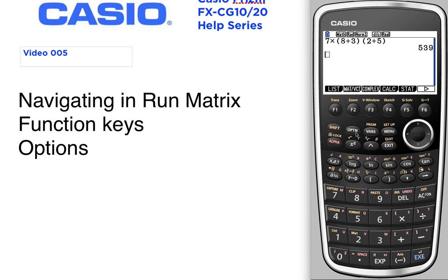If you press option, you've got vectors, complex, calculus, statistics, convert, probability, angles, and more. If you don't see an option you're looking for, that's usually where you're going to find it — in the option menu.